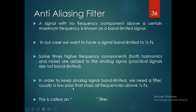After knowing the basic concepts of aliasing, we should know what an anti-aliasing filter is. A signal with no frequency component above a certain maximum frequency is known as a band-limited signal. In this case, the signal is band-limited to 1/(2·fs). Sometimes higher frequency components are added to the analog signal.